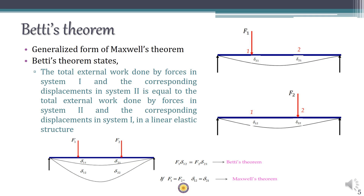External work is force multiplied by the corresponding displacement. In Betti's theorem, we take forces in one system and multiply them by the corresponding displacements in the other system. This should equal the forces in the second system multiplied by the corresponding displacements in the first system.